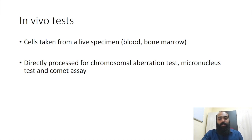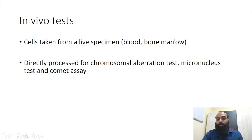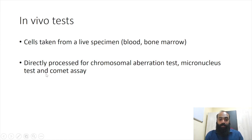The same tests can be done under in vivo conditions without needing to stimulate cell division. We usually take bone marrow cells or blood cells; in the case of fish, their red blood cells have a nucleus, whereas mammalian red blood cells do not, so we mostly use white blood cells. For mammals like mice, we use bone marrow because it contains many rapidly dividing cells. These cells can then be used for the chromosomal aberration test, micronucleus test, and comet assay, giving results similar to those seen in the in vitro tests.